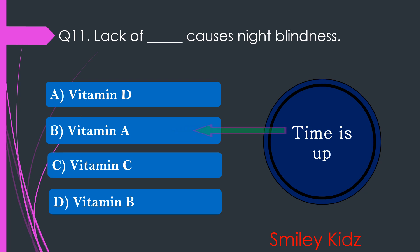Your time is up and the right answer is option B. Vitamin A. The lack of vitamin A causes night blindness.